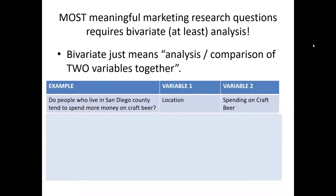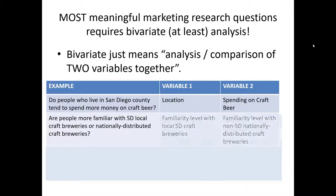This is an example that would require bivariate analysis. We need to know the location of where somebody lives and we need to know their spending on craft beer. Or consider the following. Are people more familiar with San Diego local craft breweries or nationally distributed craft breweries? One of the variables that we would need is someone's familiarity level with local San Diego craft breweries. We'd also need to know the familiarity level with non-San Diego, nationally distributed craft breweries.